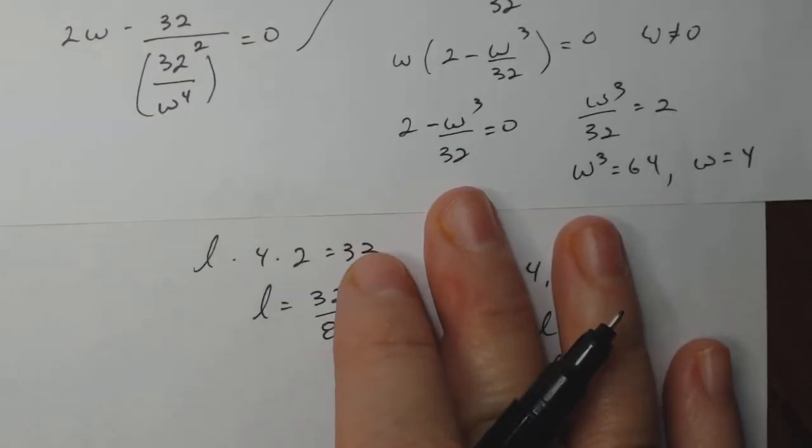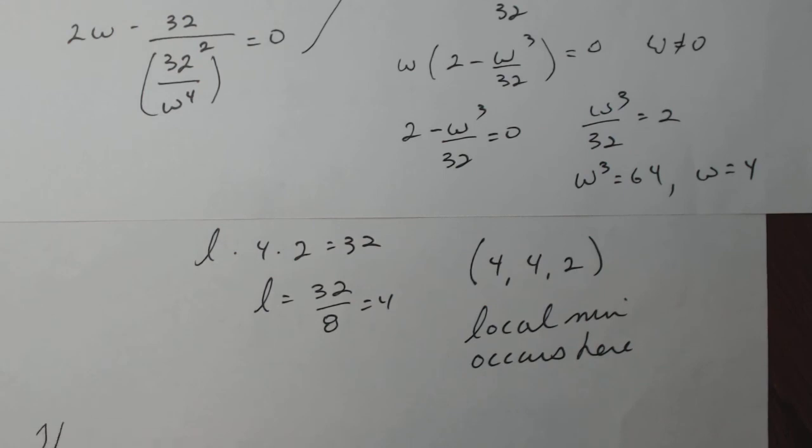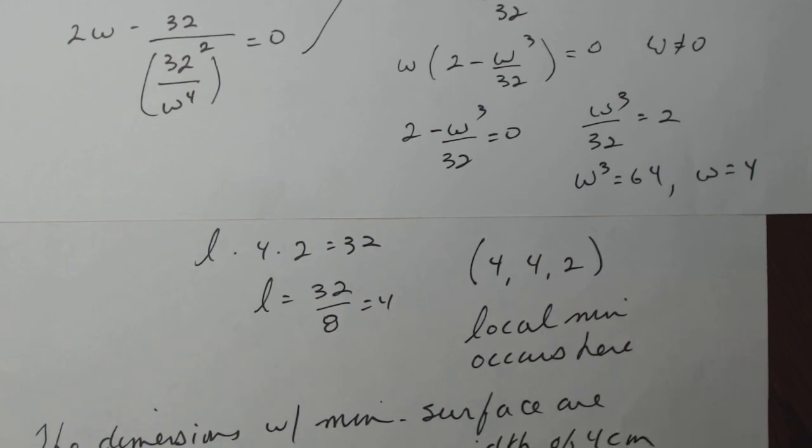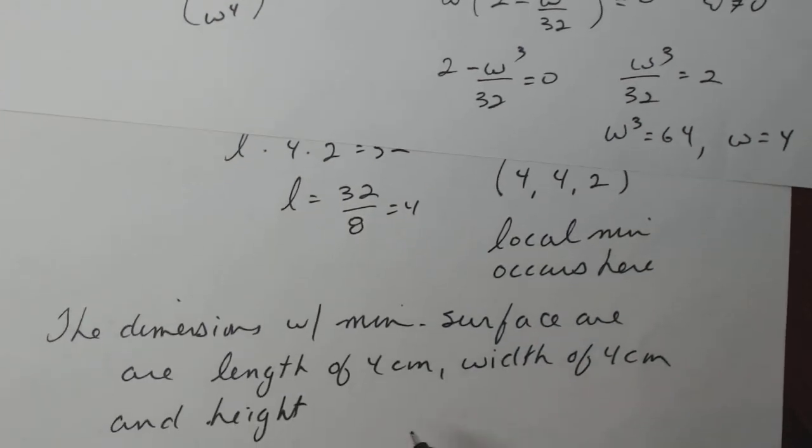The dimensions with minimal surface area, sorry about my handwriting, but you can hear what I'm saying, with minimal surface area are length of four centimeters, width of four centimeters, and height of two centimeters.